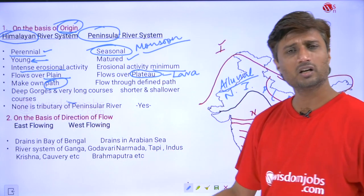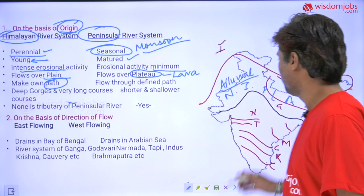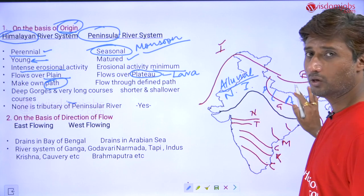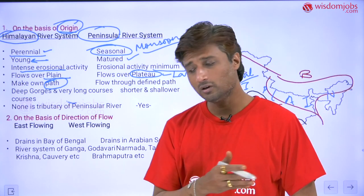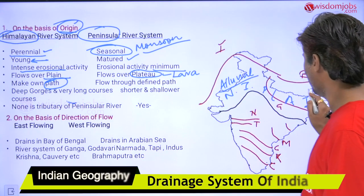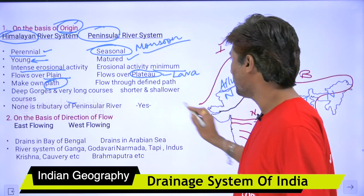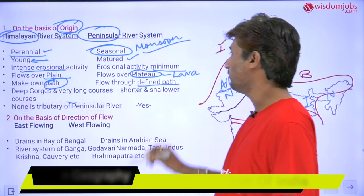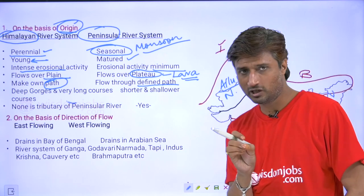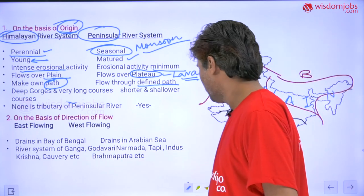Because Himalayan rivers flow over plains made of deposited sediments, they can make their own path, change and shift their courses. For example, the Kosi River has shifted hundreds of kilometers in the last hundred years — it was flowing from one point and has since shifted considerably. In contrast, peninsular rivers have a defined path through rock, so they must follow the course already carved out.